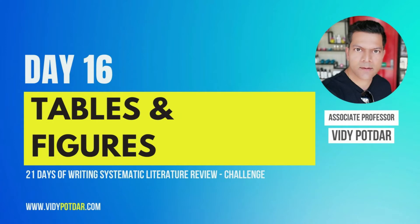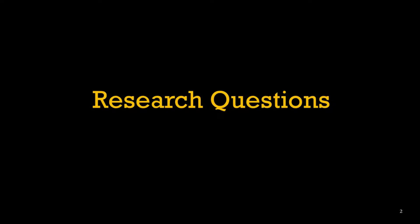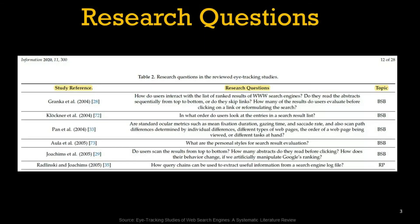I've got examples to cover all of you in this presentation. Starting off with this first table — what they have done is taken the studies reviewed in their paper and listed what research questions they answered. This is a very useful way to use it in your prior research section where you are doing the existing work, including for the SLRs that you are reviewing.